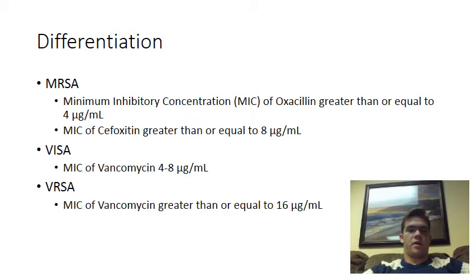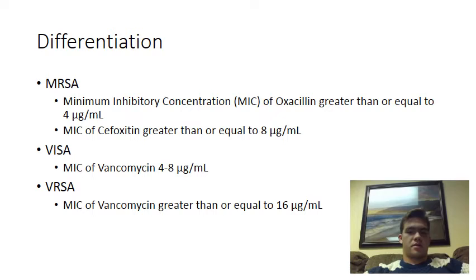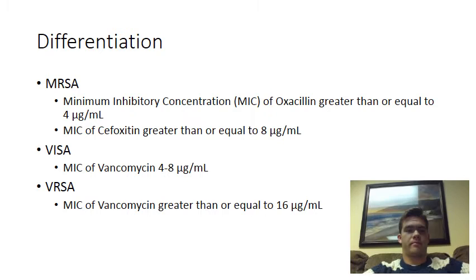In the laboratory, however, these three strains are differentiated by testing them with various concentrations of different antibiotics — putting them in test tubes with different concentrations to see the lowest concentration that will keep them from growing. This is called the MIC, or minimum inhibitory concentration. For MRSA, the MIC of oxacillin must be greater than or equal to 4 micrograms per milliliter, and for cefoxitin it must be equal to or greater than 8 micrograms per milliliter. For VISA, the MIC for vancomycin must be between 4 and 8 micrograms per milliliter, and for VRSA the MIC of vancomycin must be greater than or equal to 16 micrograms per milliliter.